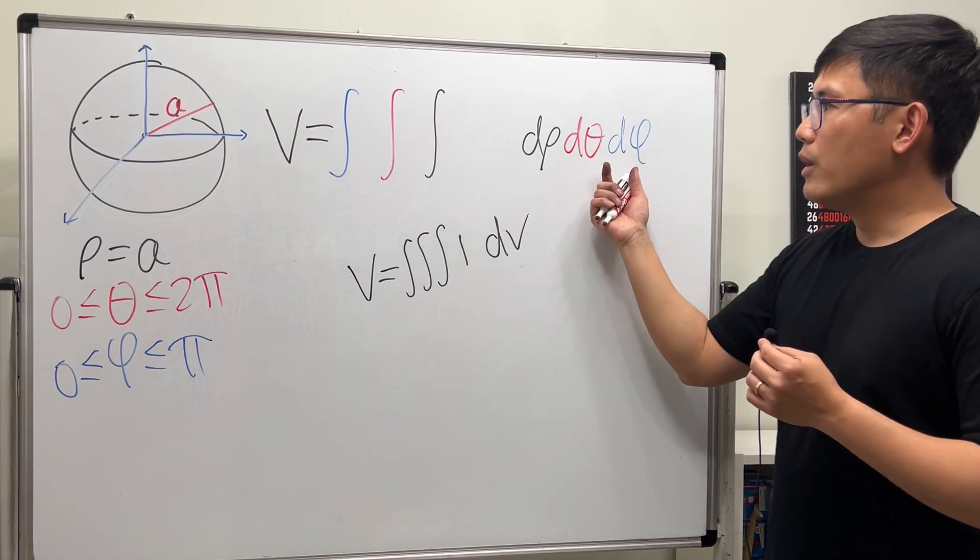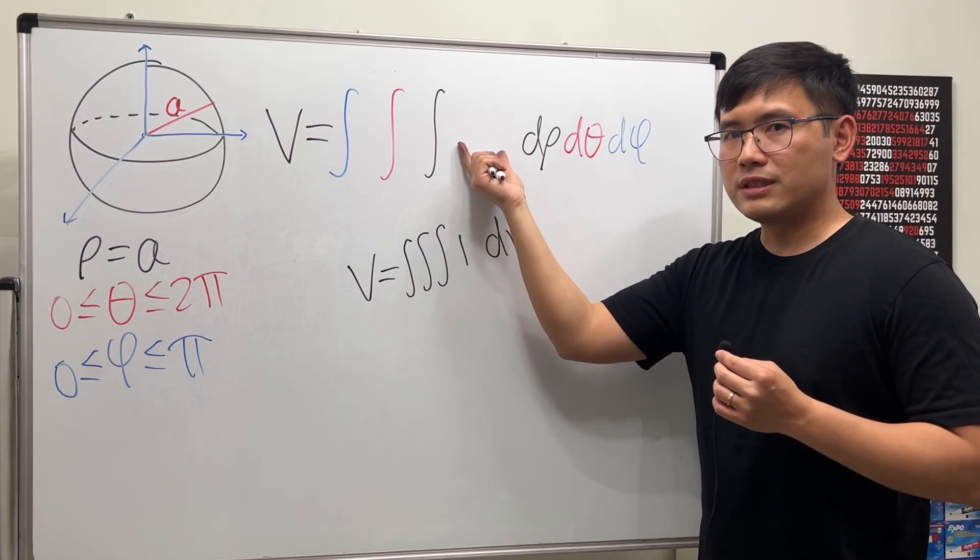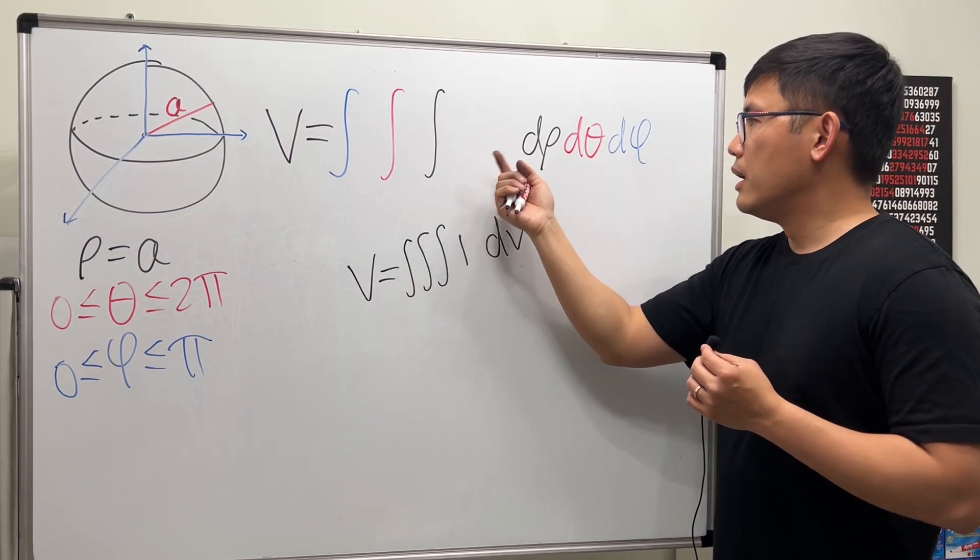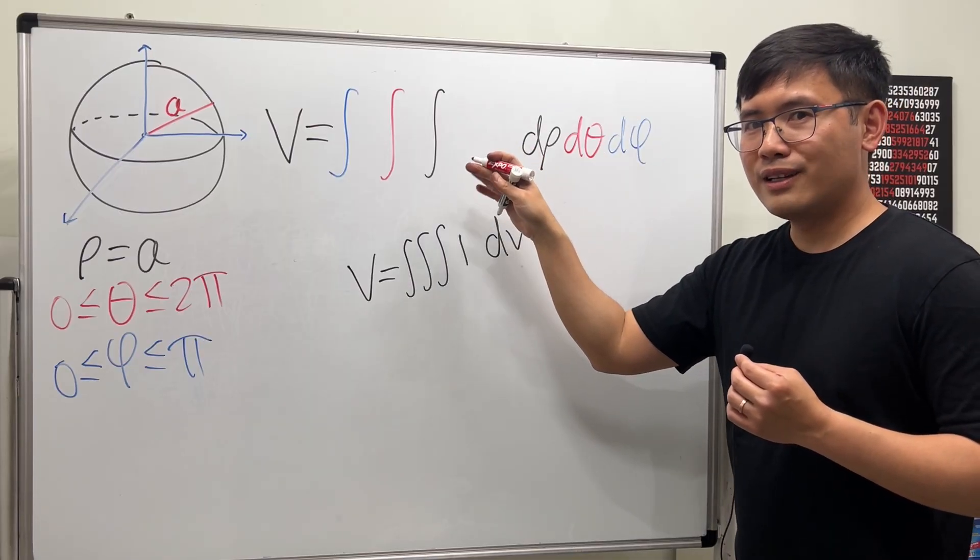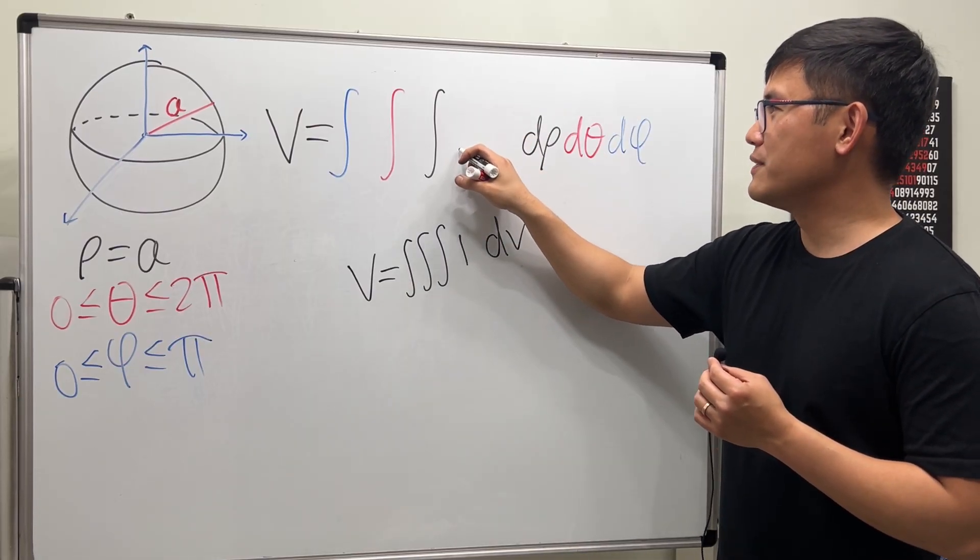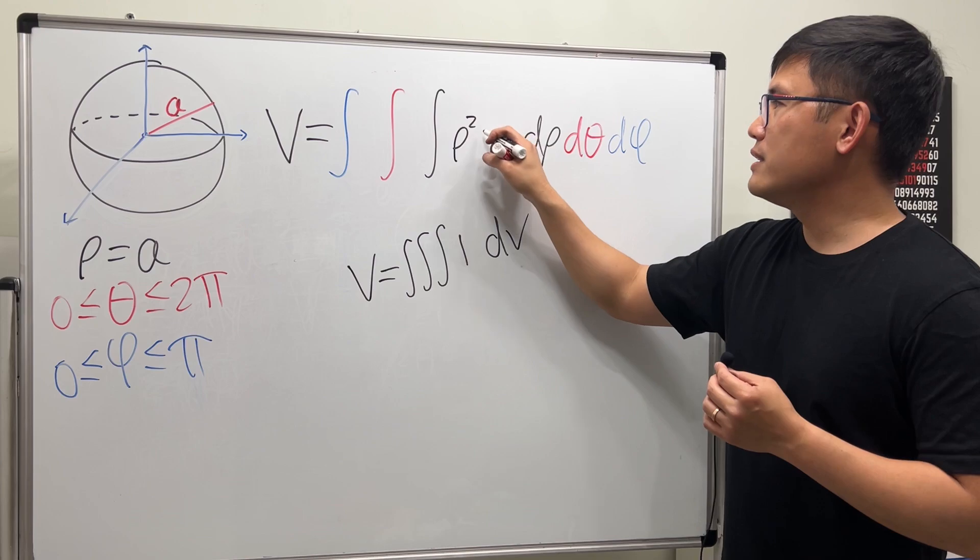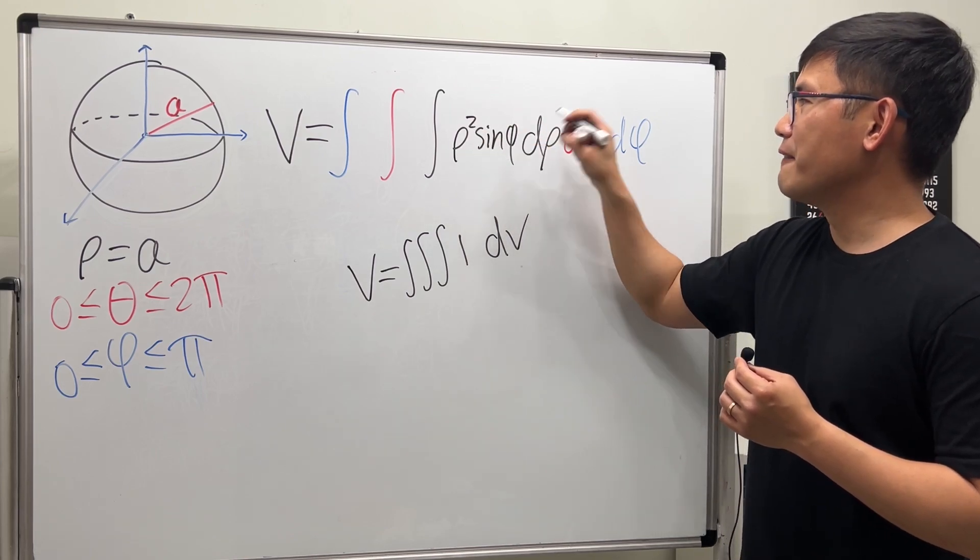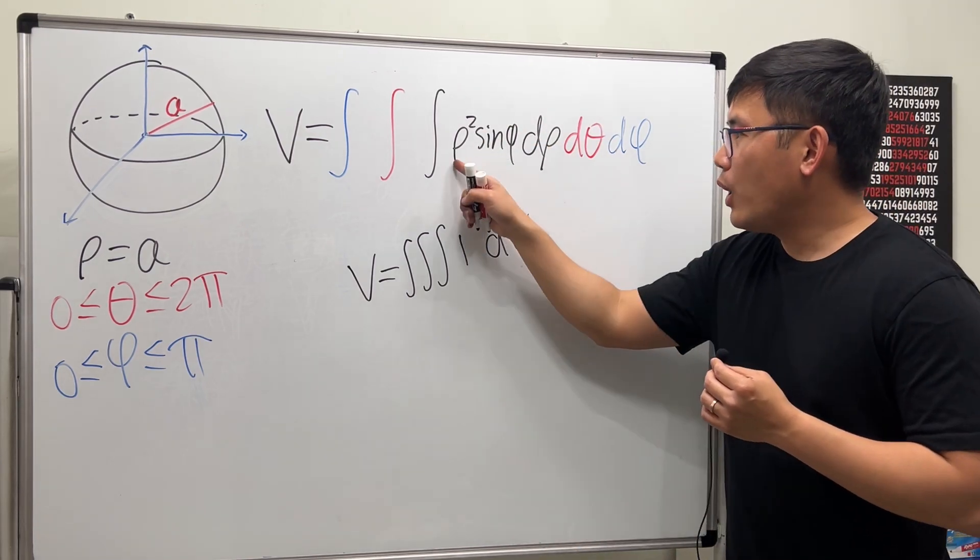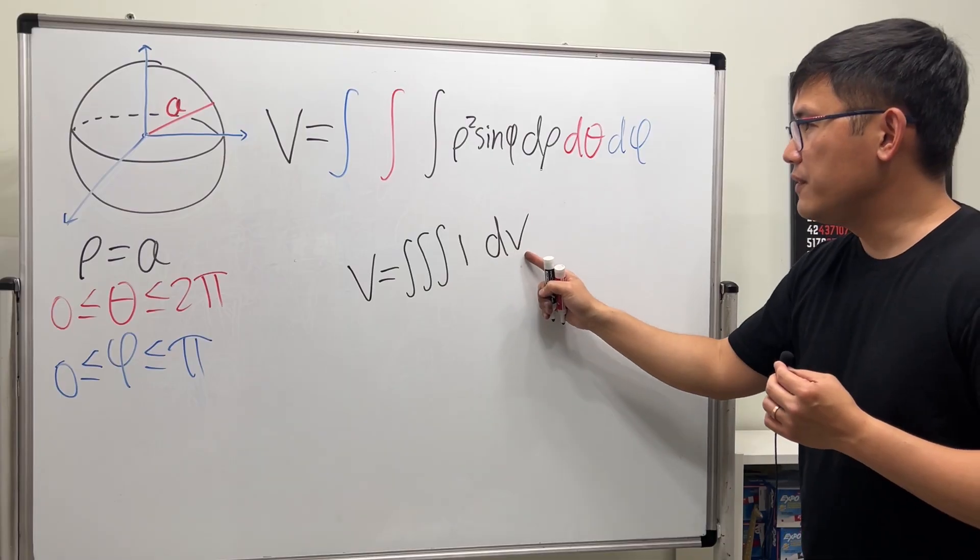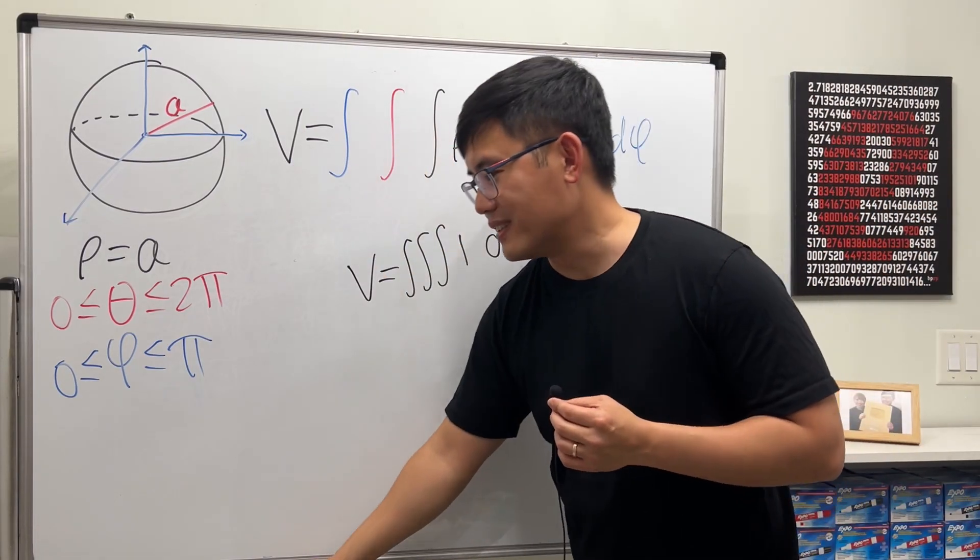However, remember that there is also some more stuff right here. And that is what? Hopefully, you guys have seen my previous video. It's ρ squared times sin φ. All this right here is the dV in this spherical coordinate system.